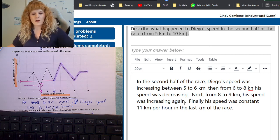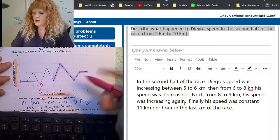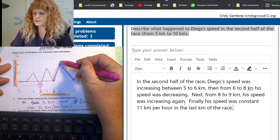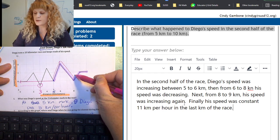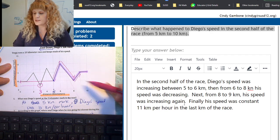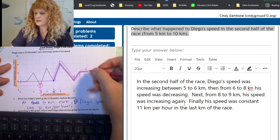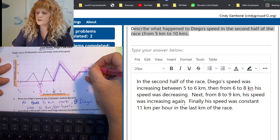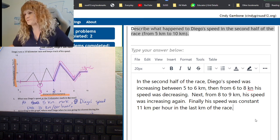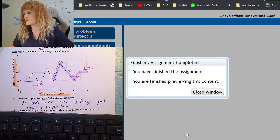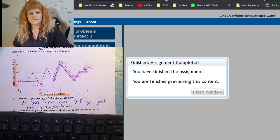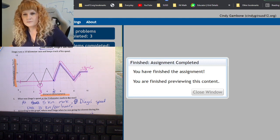You can pause the video and copy what I wrote if it helps you or write your own answer as long as you explain all the portions of his increasing speed from five to six kilometers, his decreasing speed from six to eight, increasing speed from eight to nine, and constant speed at 11 kilometers per hour for the last kilometer. And then submit your answer. Good job.